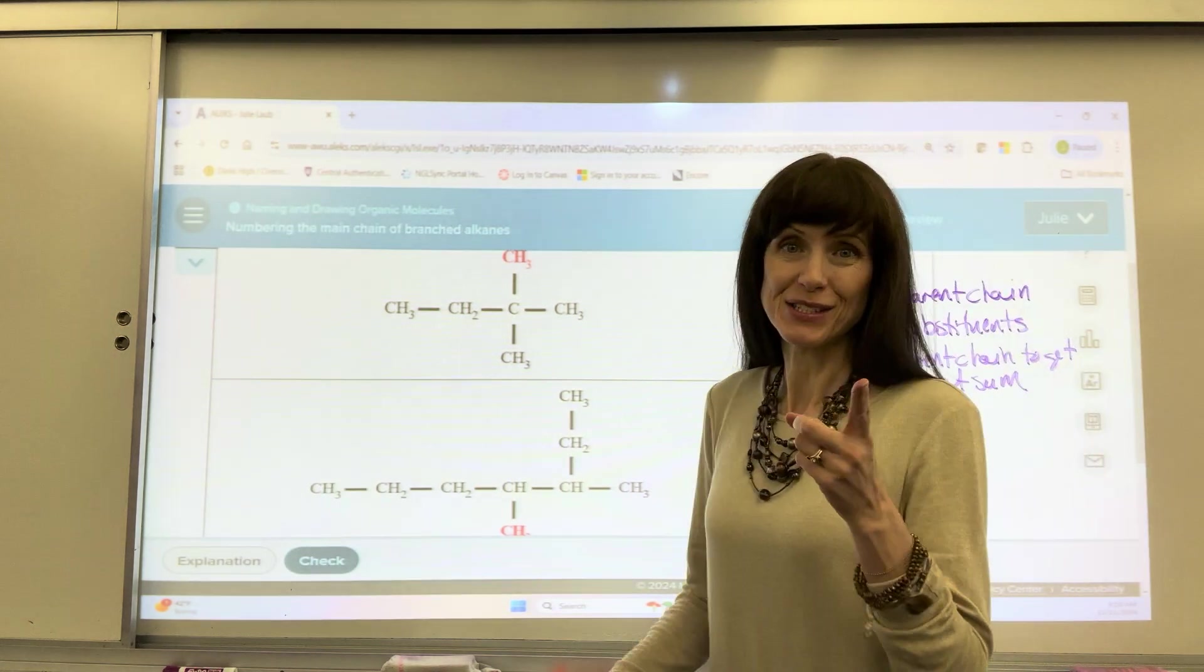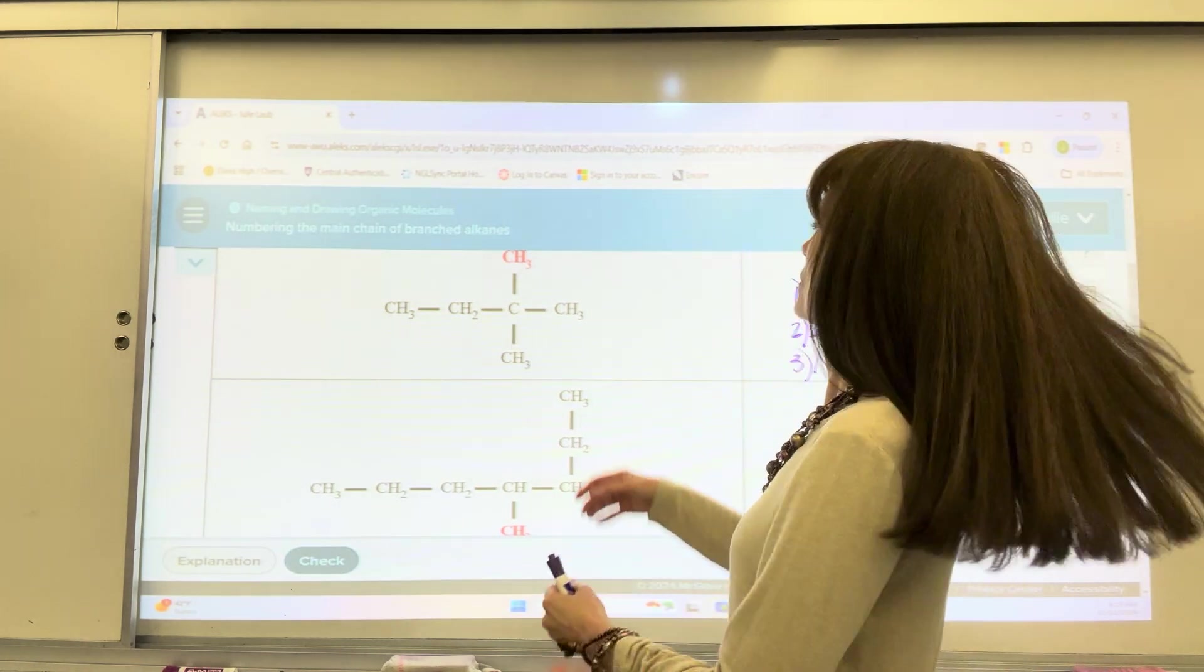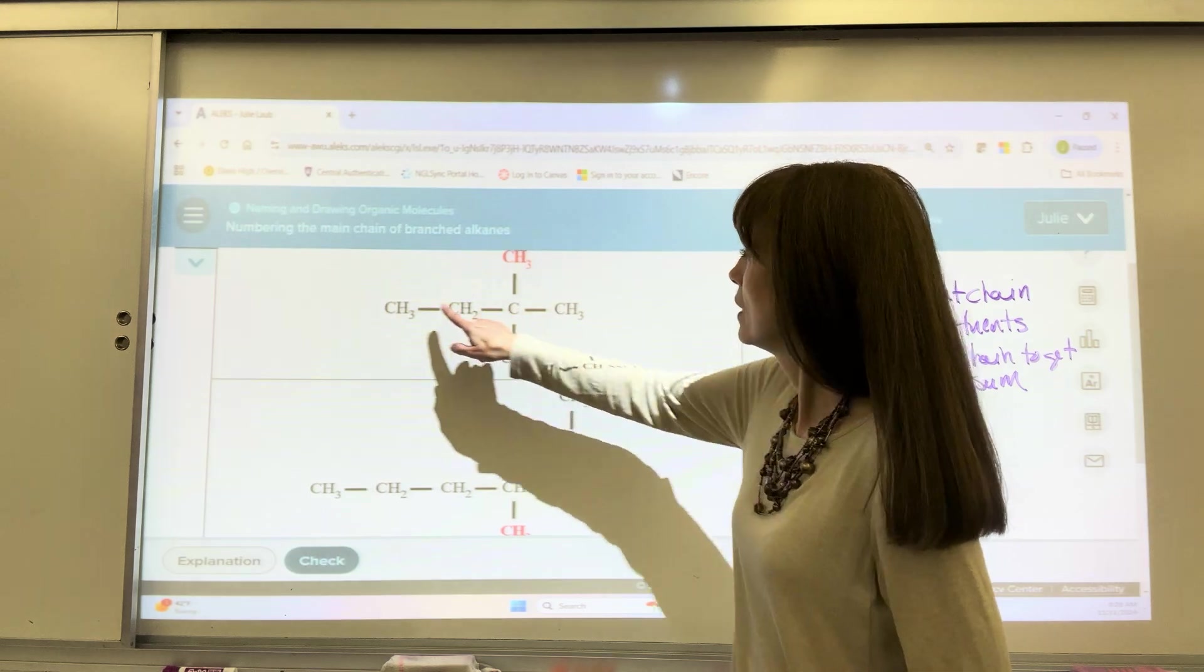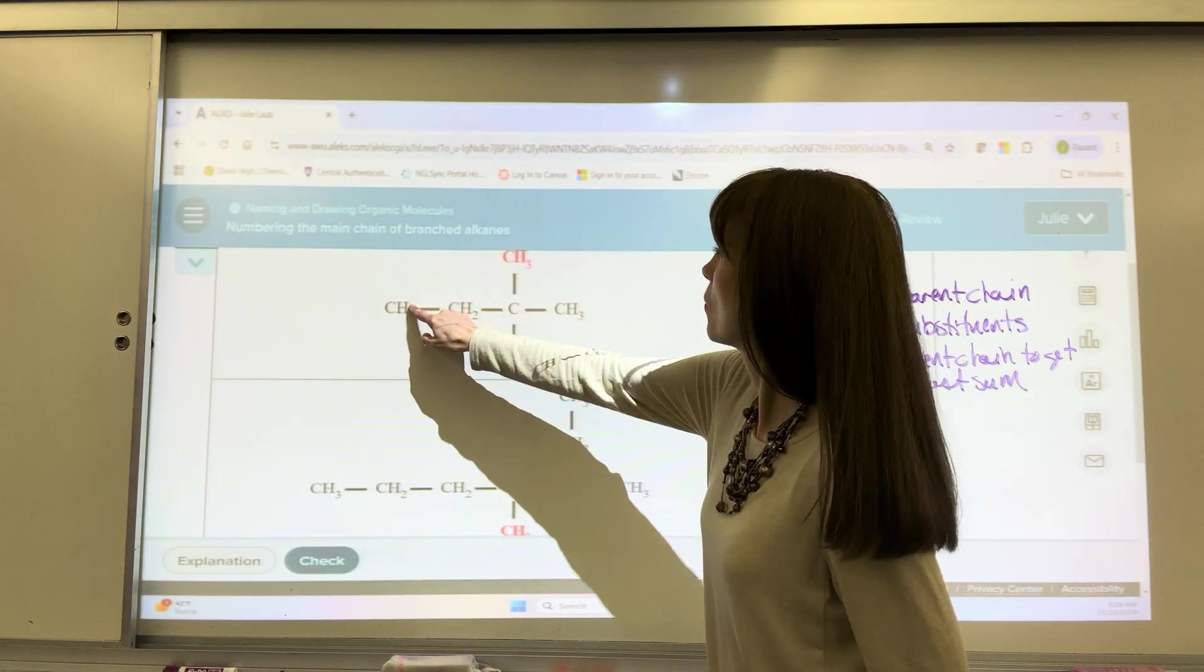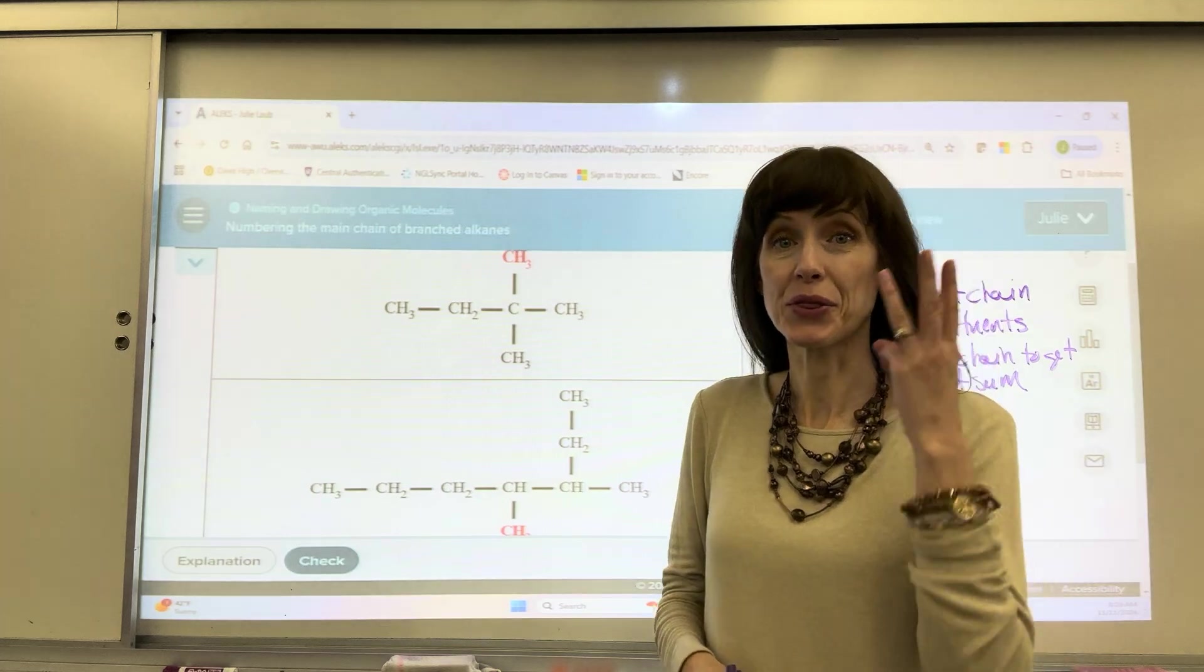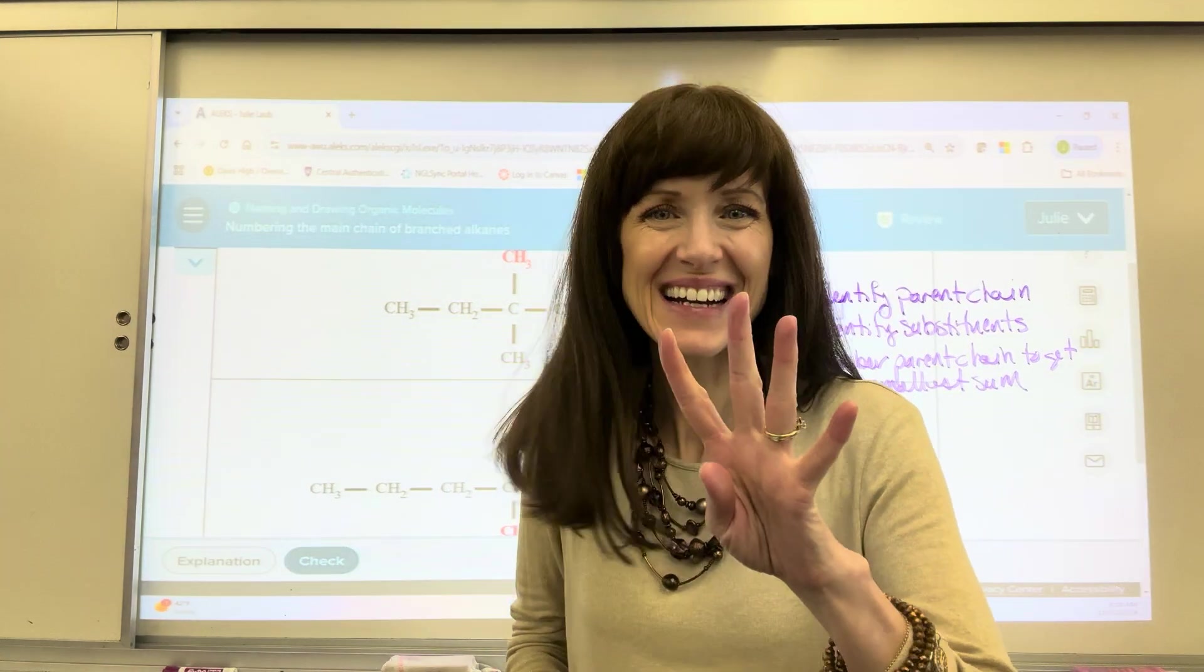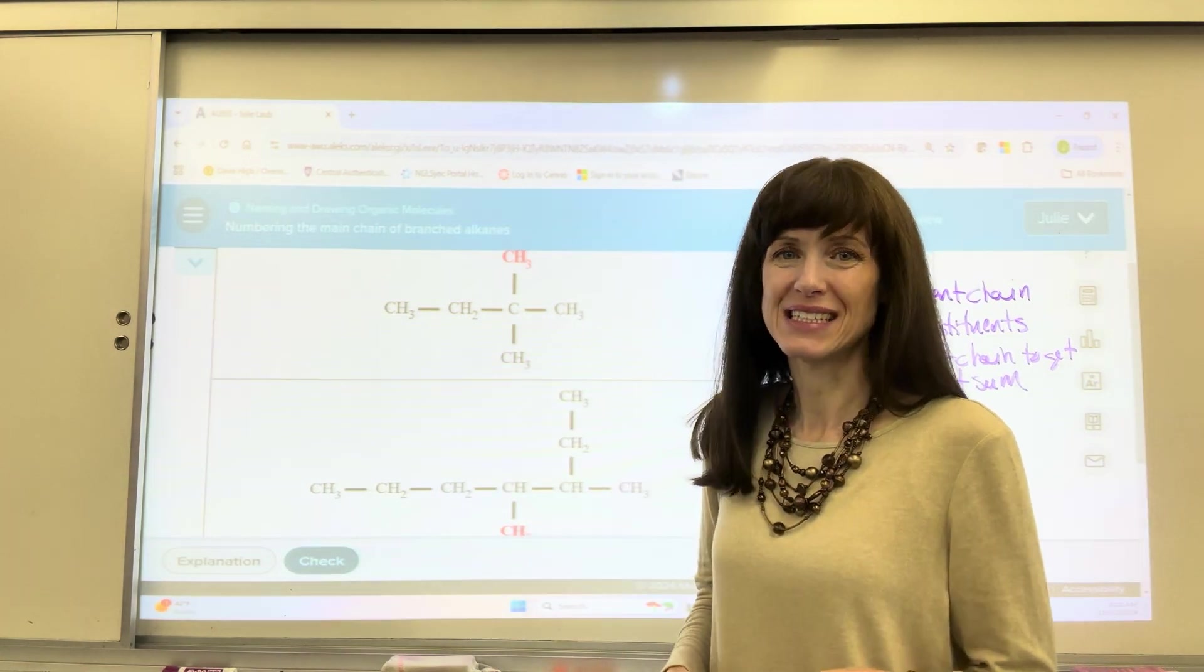Okay, first thing we have to do, find that longest chain. So we could go 1, 2, 3, 4, 1, 2, 3, 4, 1, 2, 3, 4, 1, 2, 3. So I can see that three, or excuse me, 4 is going to be our longest continuous chain.